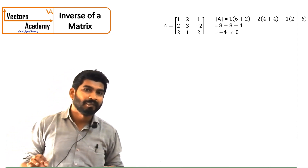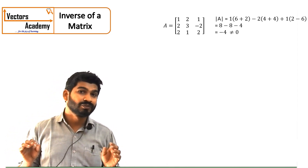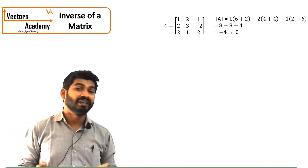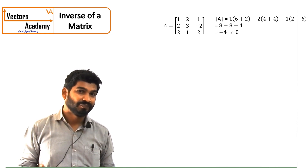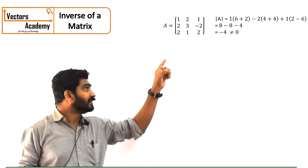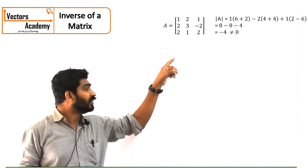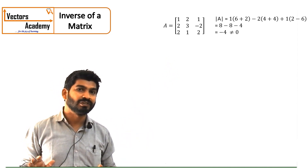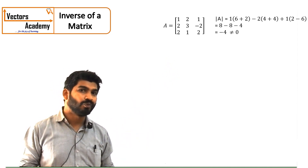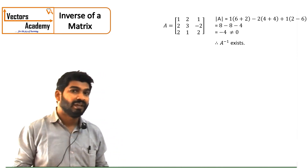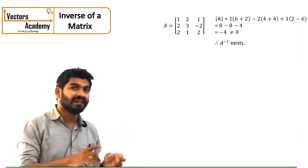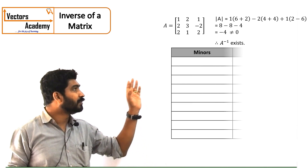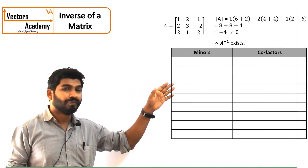Now if the determinant of a matrix is equal to 0, then the inverse could not be found out — the inverse does not exist. You can see the determinant of matrix A is minus 4, it is not equal to 0, and therefore I can say that A inverse, the inverse of matrix A, exists. The next step is to find out the minors and the cofactors.